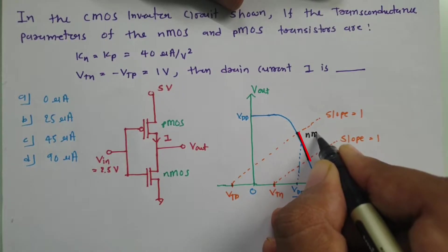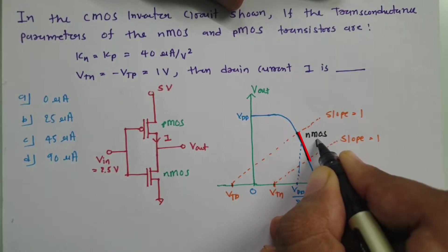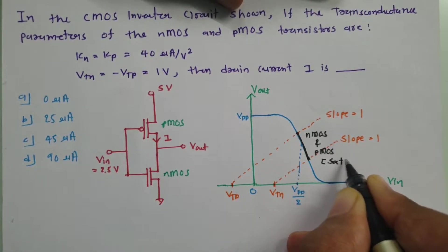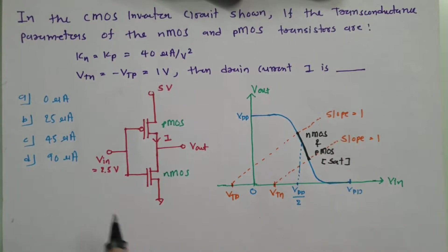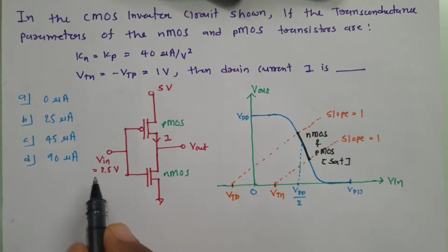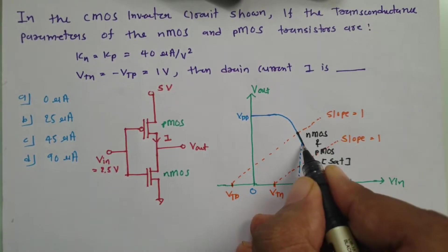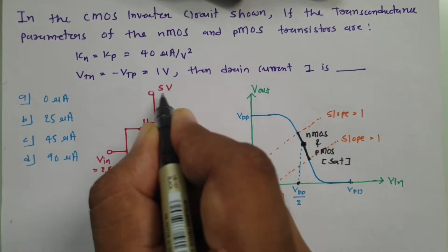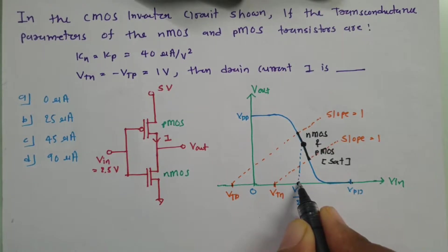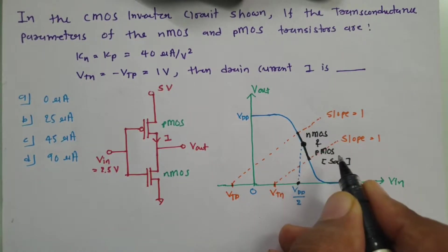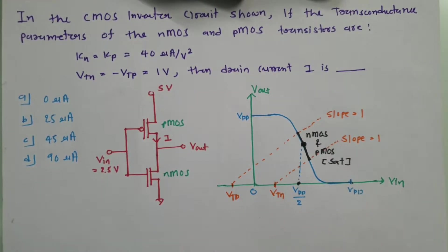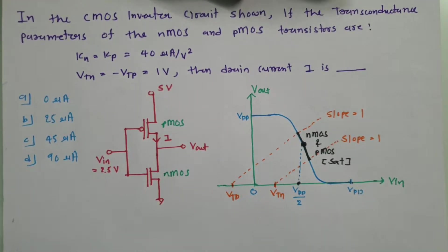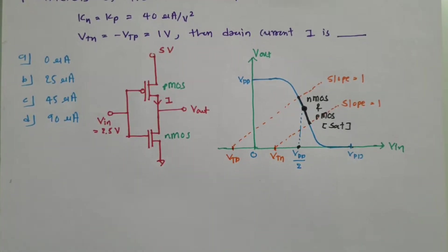In that center region, both NMOS and PMOS are in the saturation region. Since the input is 2.5 V and VDD is 5 V, the input is exactly at center — meaning both NMOS and PMOS are operating in saturation. Therefore, the current I can be identified using the saturation current formula.